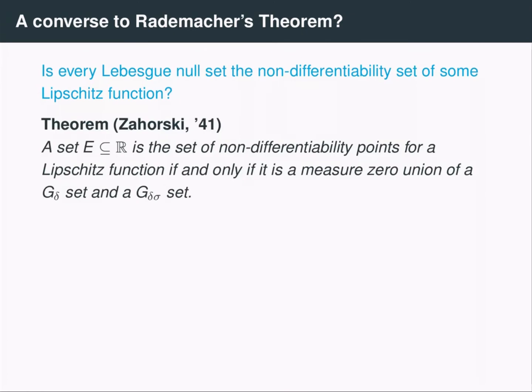So Zaworski first considered this question in the 40s, and he has completely characterized Lipschitz non-differentiability sets in the real line. So a set E is exactly the set of non-differentiability points for some Lipschitz function if and only if it's a measure zero union of a G_δ and a G_δσ set.